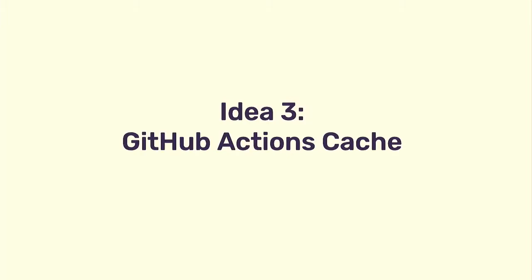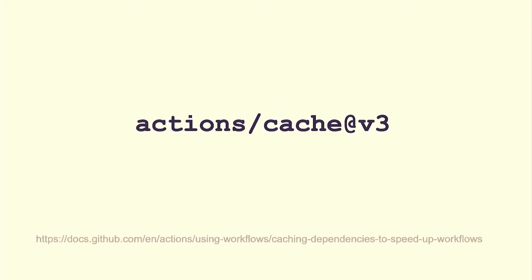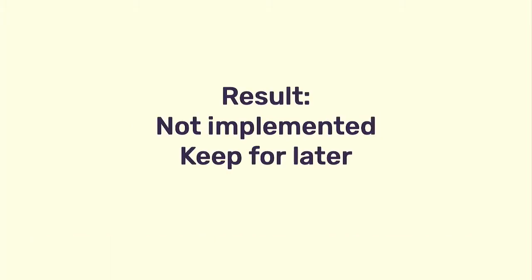The next thing was using the GitHub Actions cache. Tox creates a virtual environment — a directory where it installs dependencies from PyPI — and I wanted to cache that directory between runs. There's an Actions Cache feature for this. But the problem was: if a dependency updated after we cached it, our cache wouldn't be invalidated, so we'd be running tests against an old version of the dependency. Long story short, I didn't implement it, but I kept the idea for later.